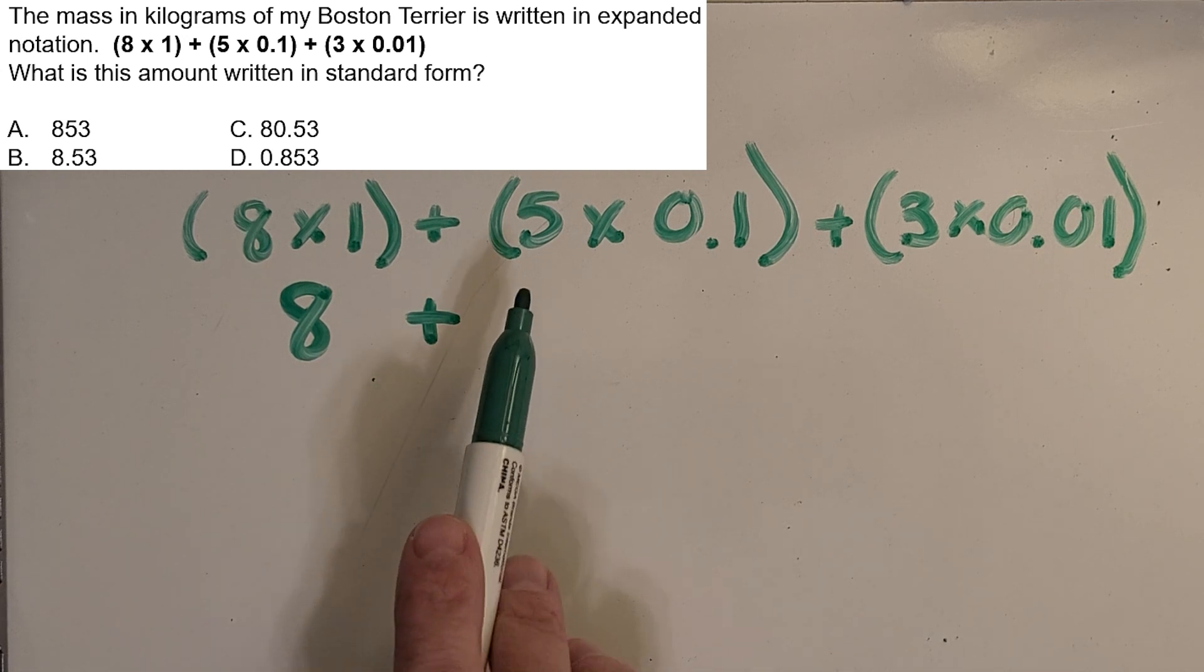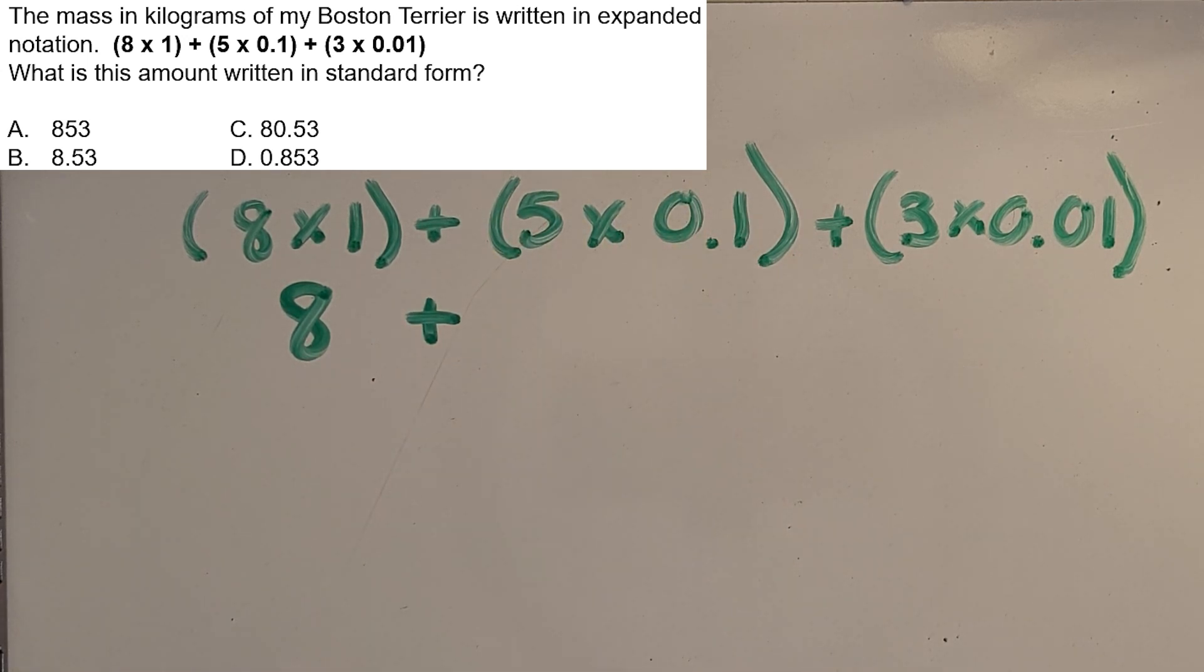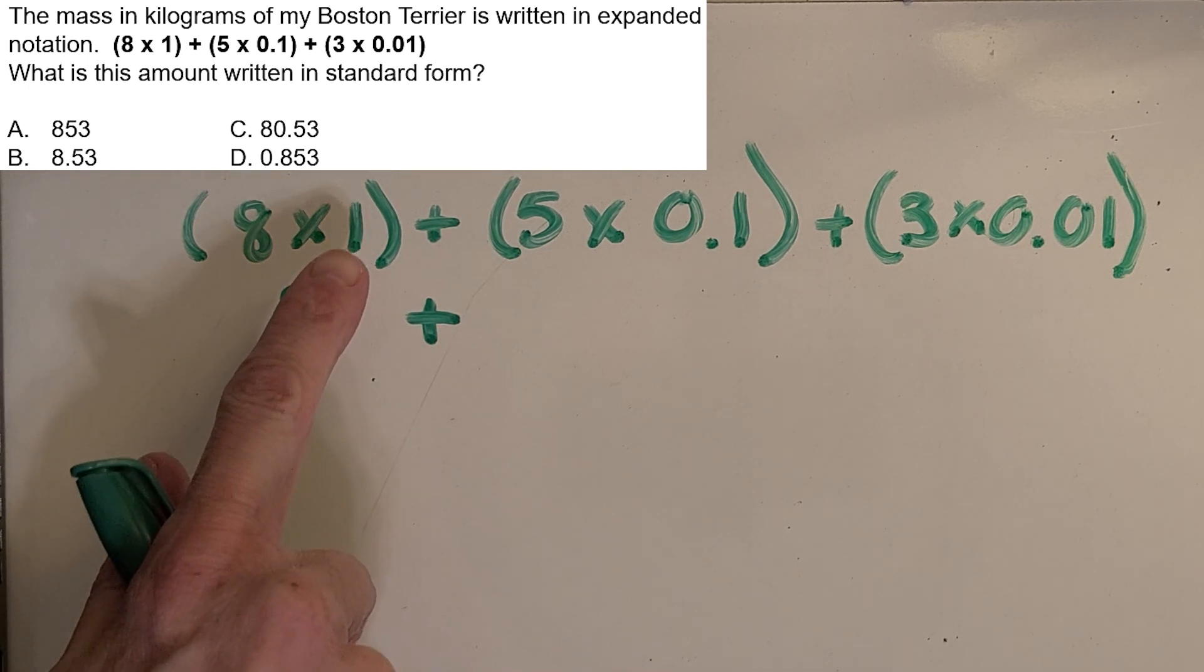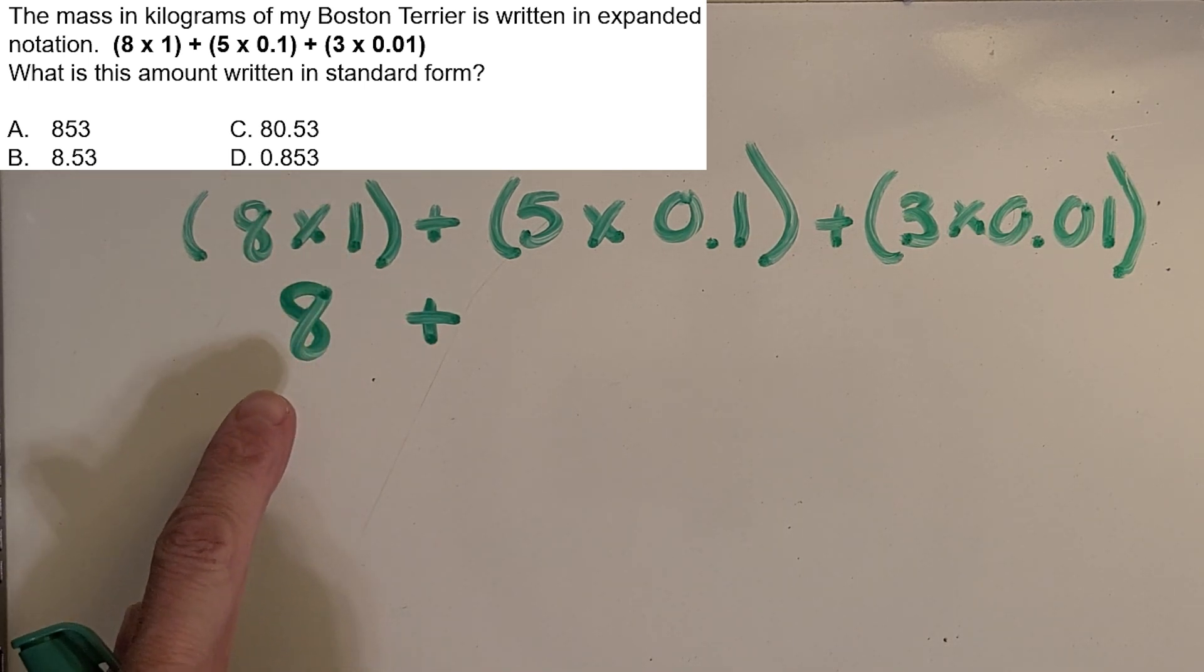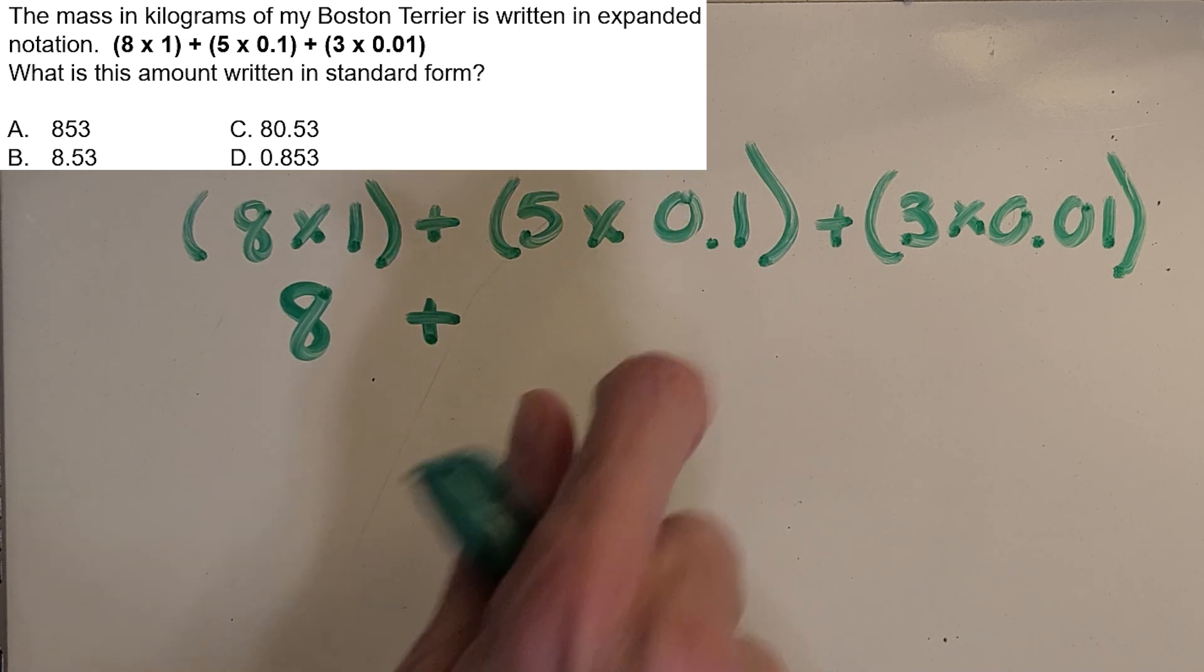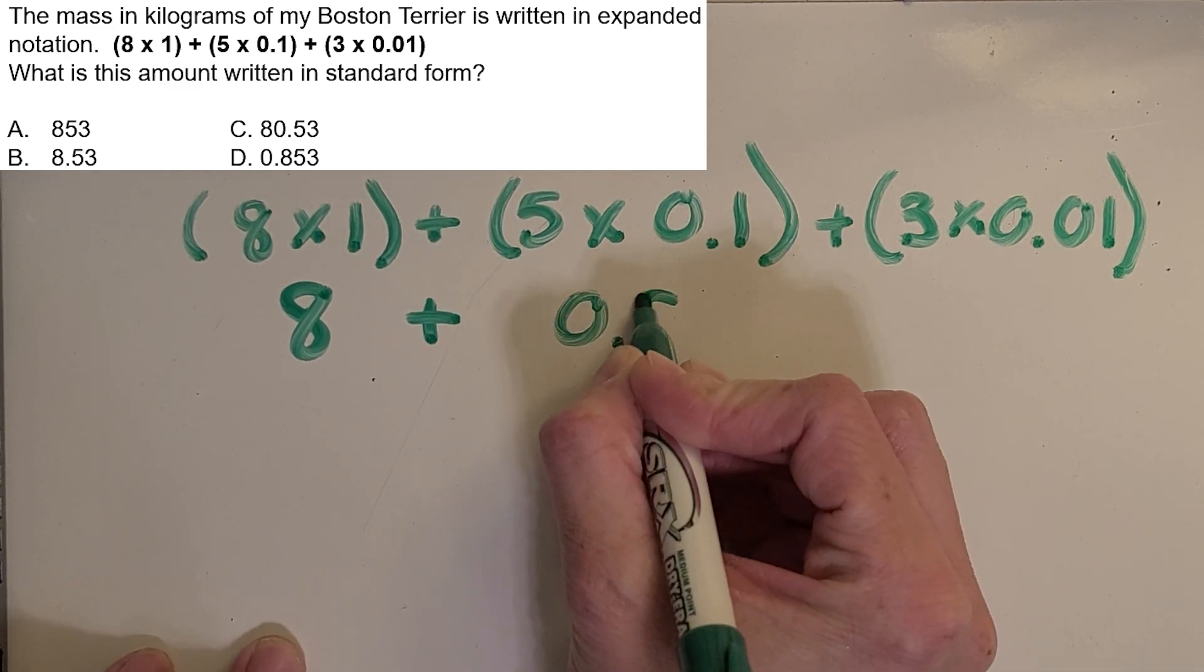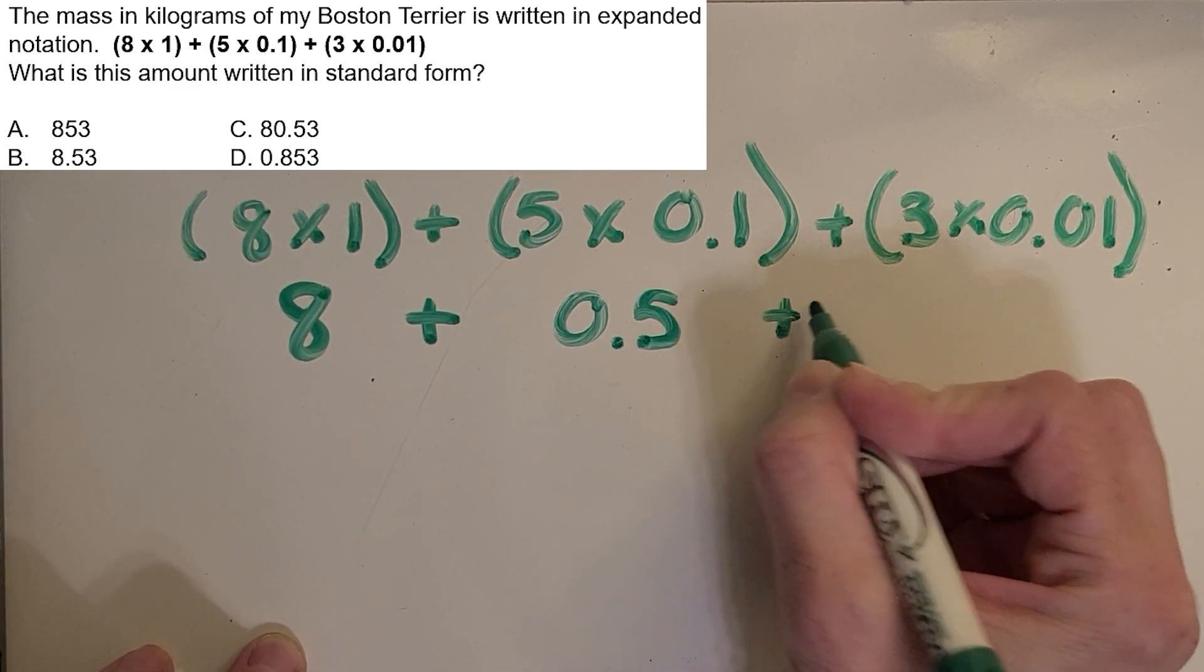All right, then what do you think is five times one-tenth? That can be a little tricky with decimals, but just think about it like counting. You know, this one, we just counted up eight ones, right? So what do you think five one-tenths would be? Okay, awesome. Just five-tenths.